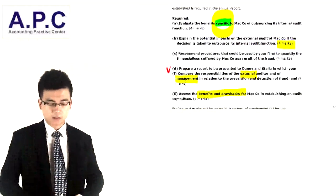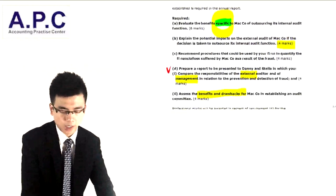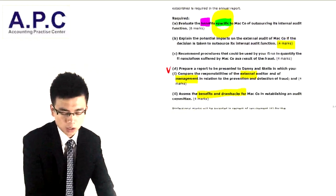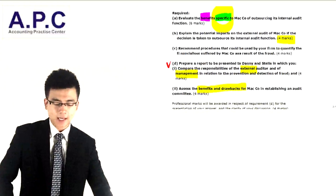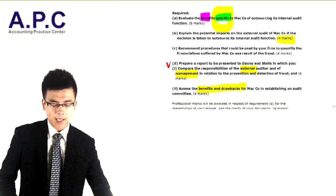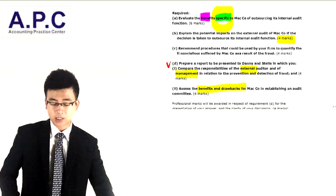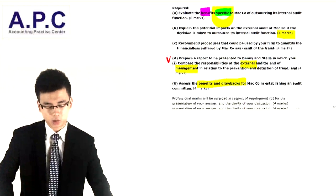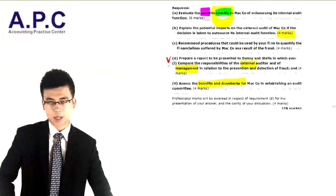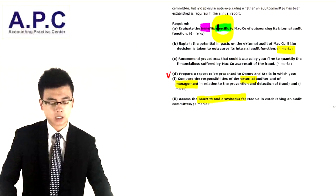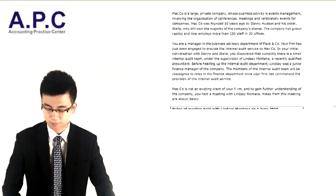So, just to give you a flavor: Part A covers outsourcing the internal audit function's benefits. Part B is the impact on external audit if internal audit is outsourced. Part C is about fraud. Part D is about the report. Let's read through the scenario before moving further.